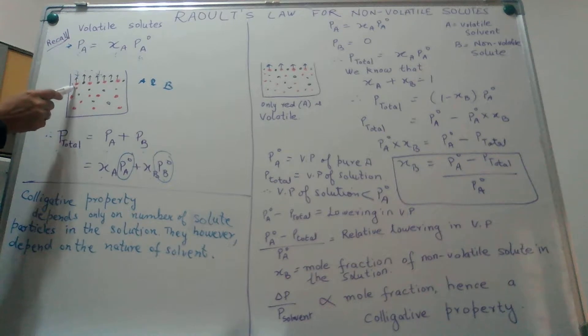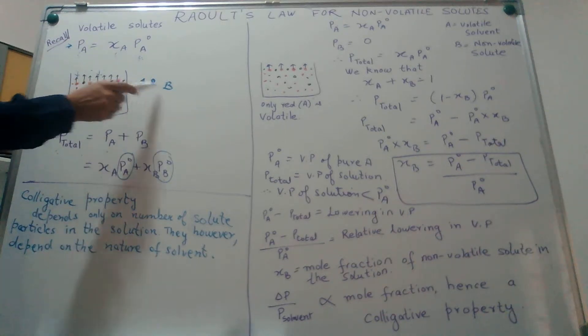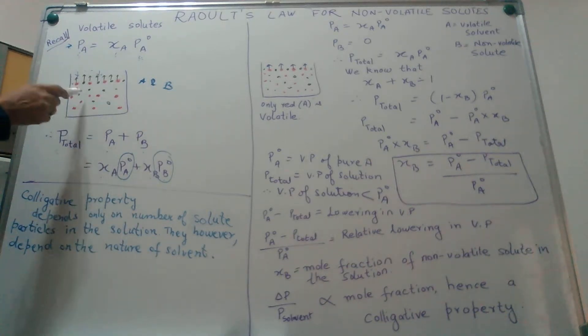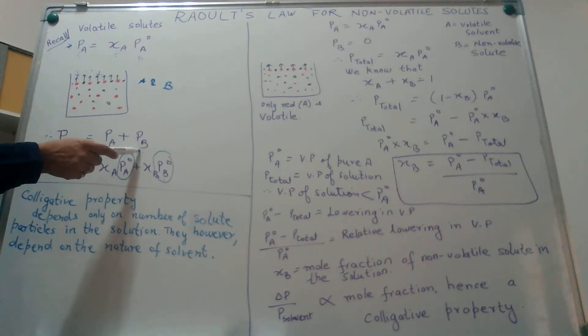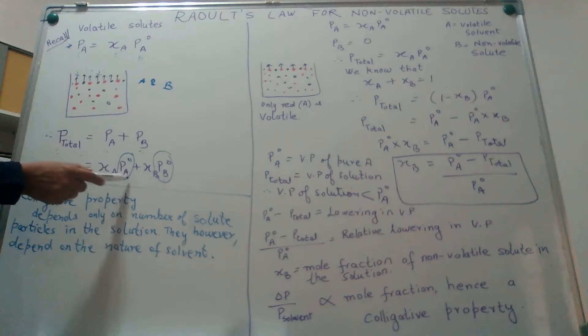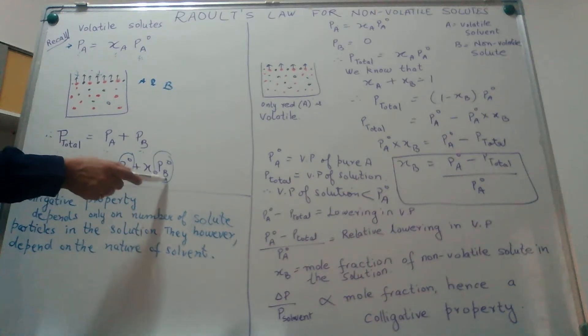We are talking about the binary solution A and B where both A and B are turning into the vapor state. Hence, the total vapor pressure in this binary mixture would be the sum of the vapor pressure of each of the individual components, that is xA into Pa0 plus xB into Pb0.